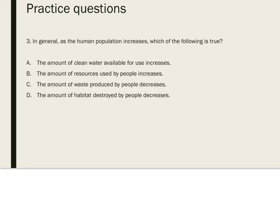Practice question three: In general, as the human population increases, which of the following is true? As human populations increase, it becomes more and more important to manage Earth's resources very carefully. The amount of resources used by people will increase, but the amount of resources available on Earth doesn't necessarily change. The answer is B.